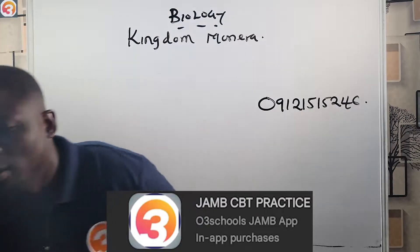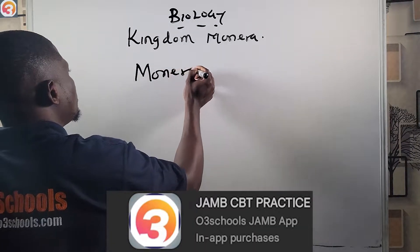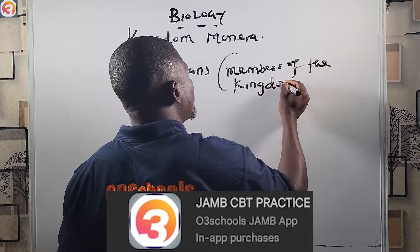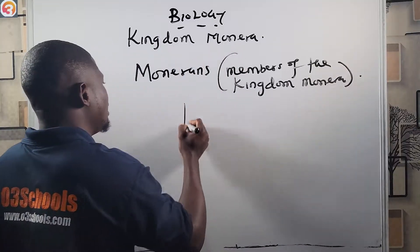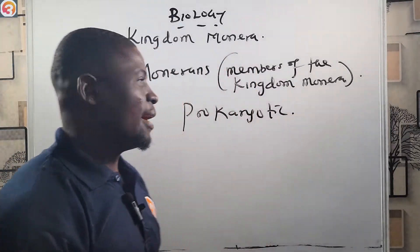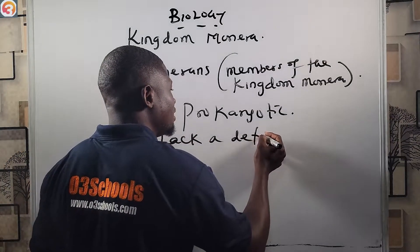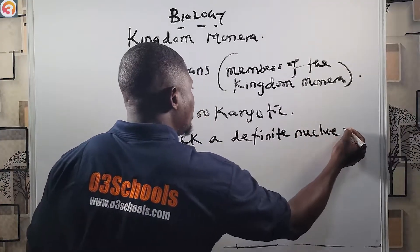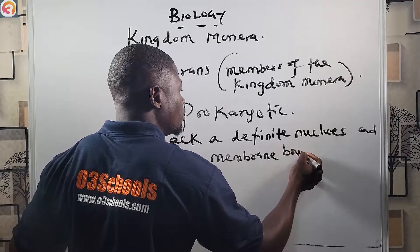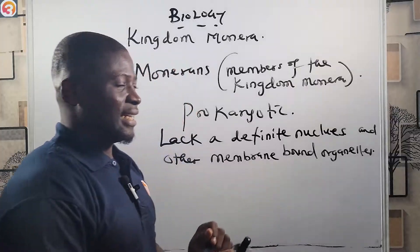Now let's look at Kingdom Monera. The monerans — that is, members of the kingdom Monera — are prokaryotic. Prokaryotes lack a definite nucleus and other membrane-bound organelles.